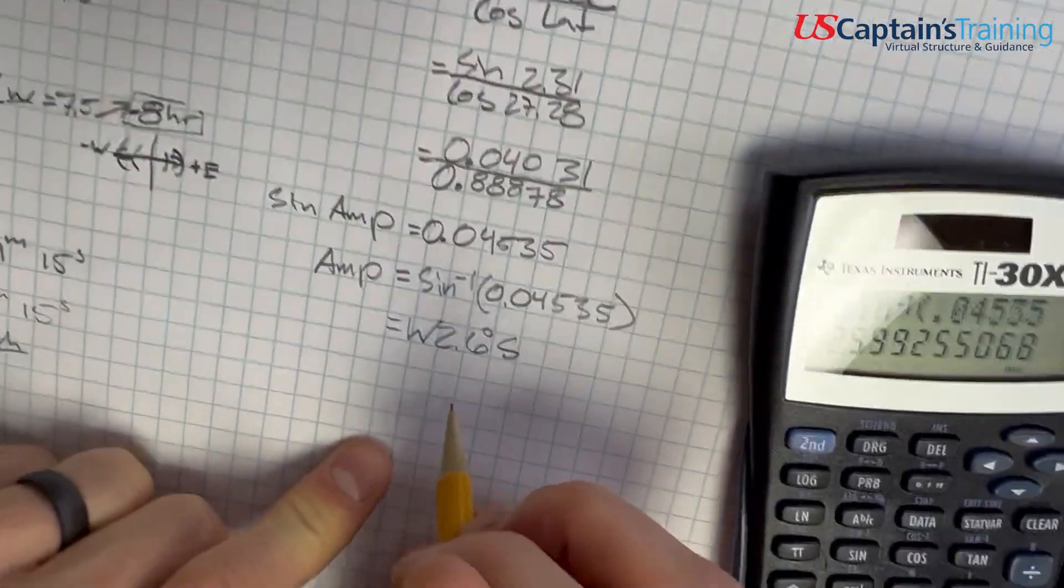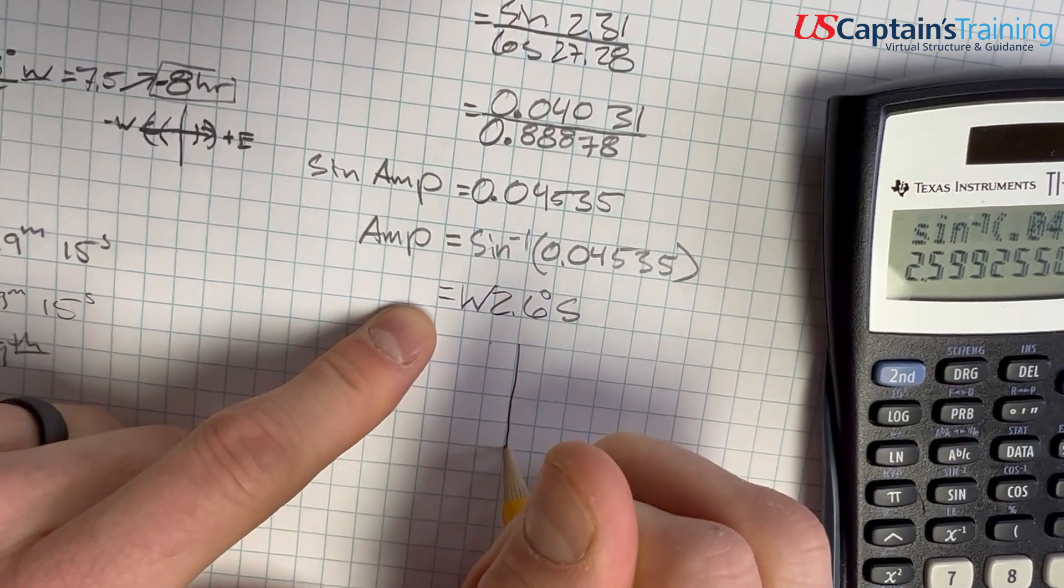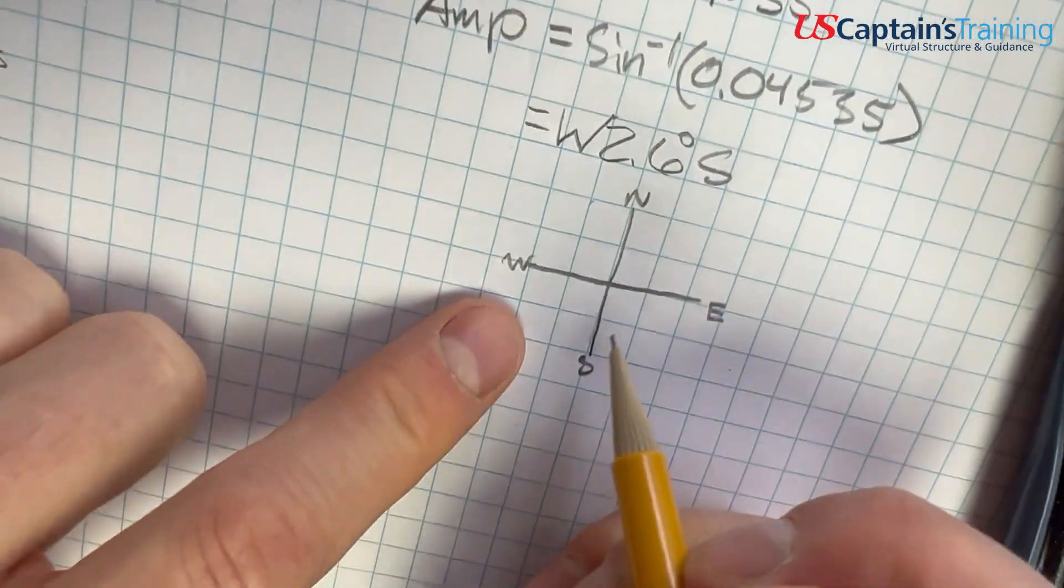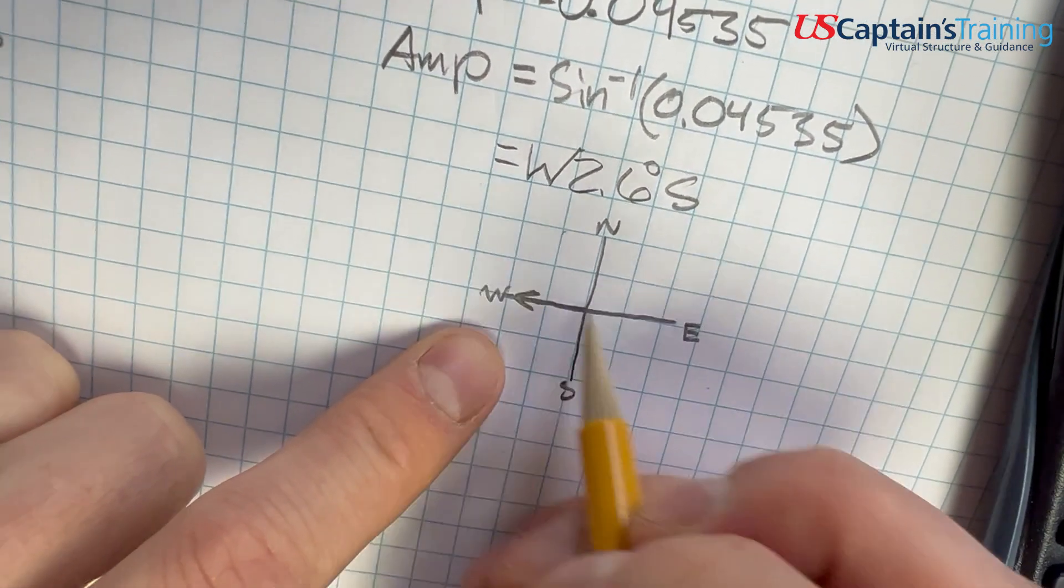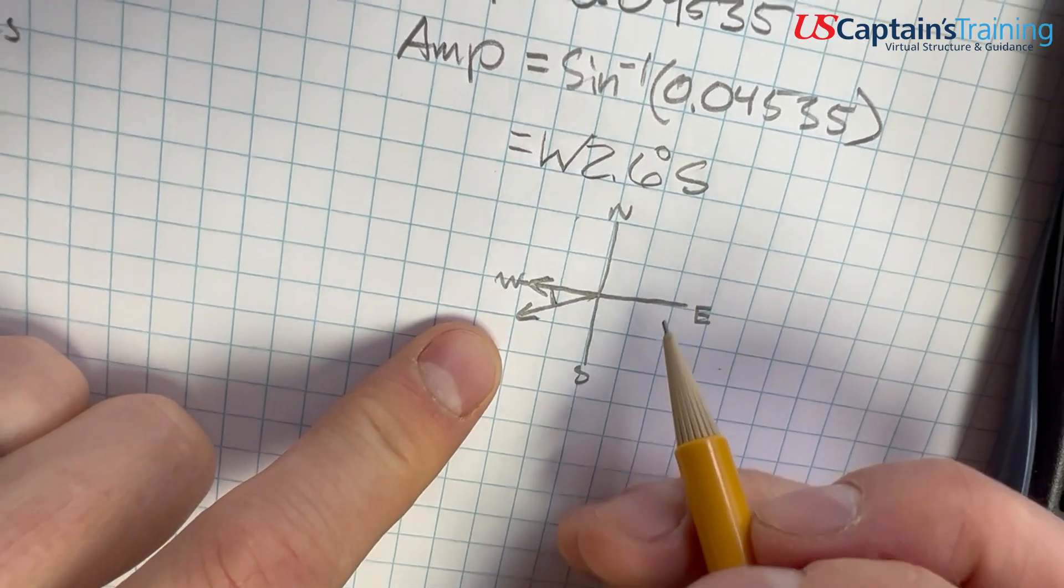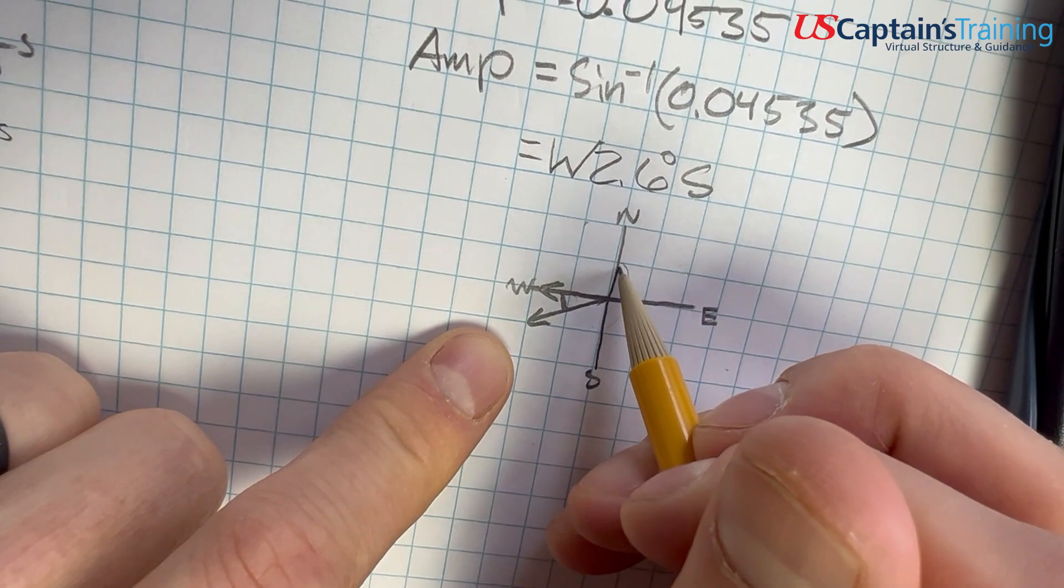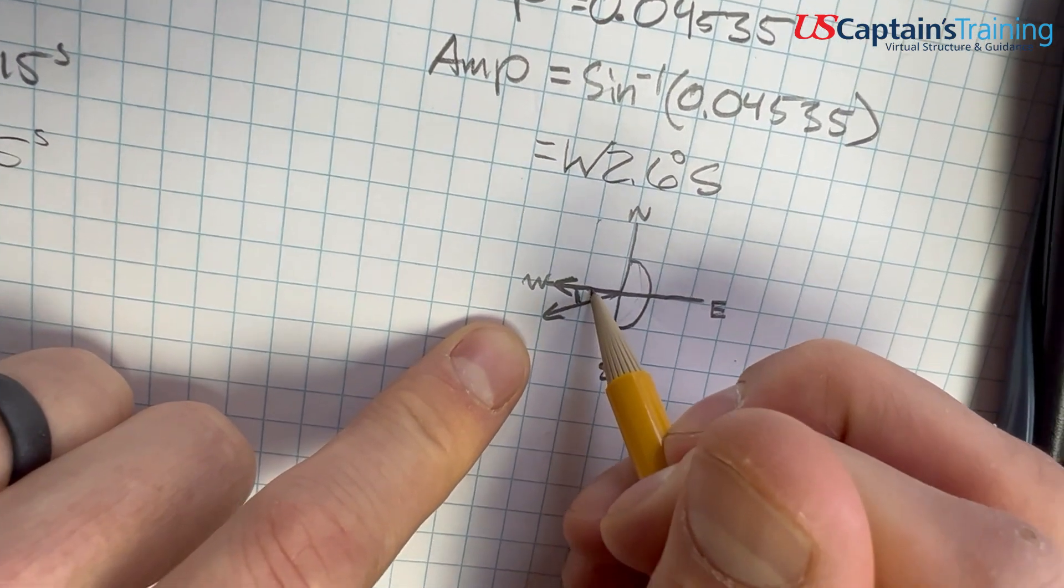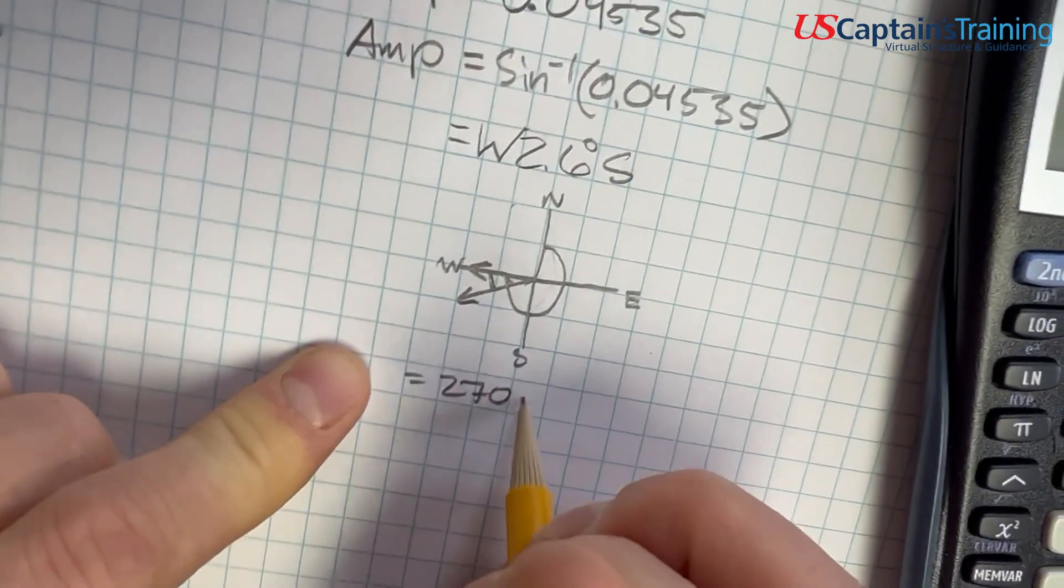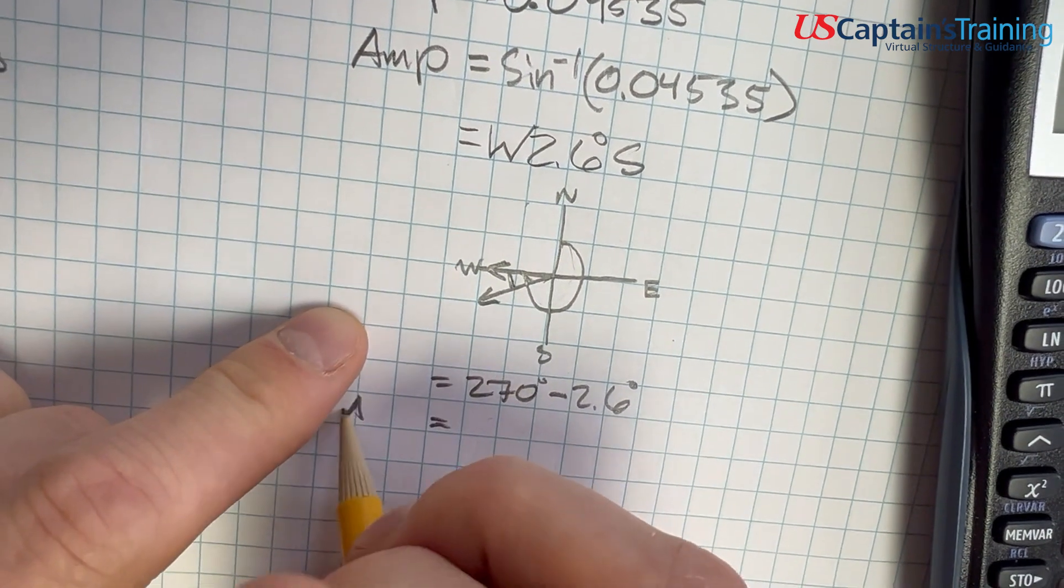Now we need to figure out the degrees from north. Make a little graph: north, south, east, and west. We start out west, and we're south of west 2.6°. So we're down here. We can say 270° minus - take 270° and subtract here. From north, we're 270° minus 2.6°, and that equals our amplitude from north.